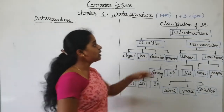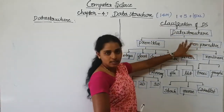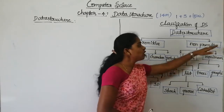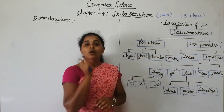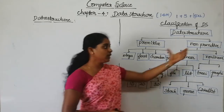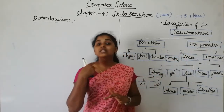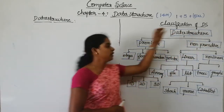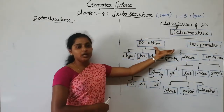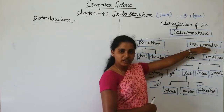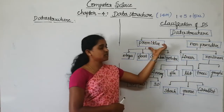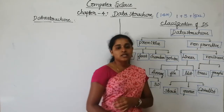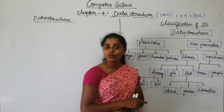Now we will move on to the second type of data structure — non-primitive data structure. This non-primitive data structure is the complex, or difficult, level of the data structure. It can be derived from the primitive data structure. This non-primitive data structure is again divided into two types.